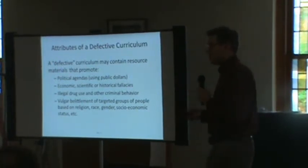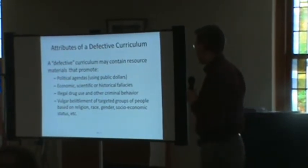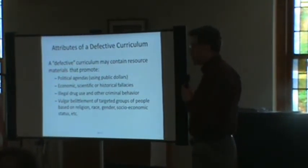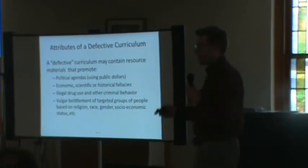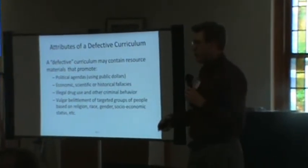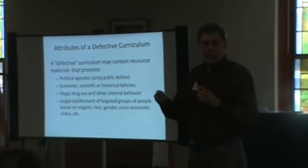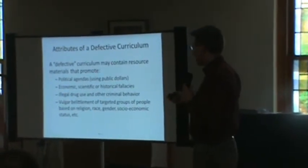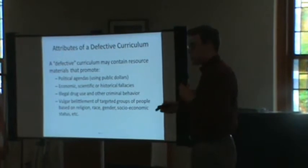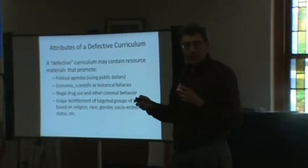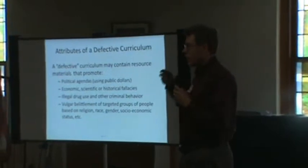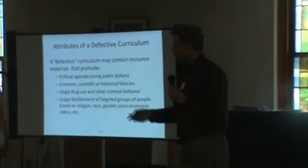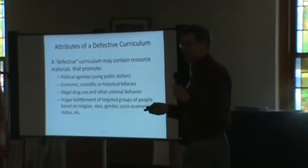What are some attributes of a so-called defective curriculum? A defective curriculum may contain resource materials that promote political agendas — taking public dollars and using them to promote specific political agendas in the classroom. That would be a defect. Other examples would be economic, scientific, or historical fallacies. Above all, education should be truthful. We don't teach that one plus one equals three or that the earth is flat.